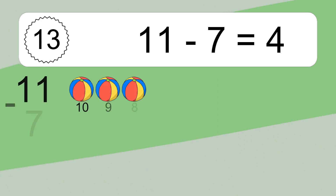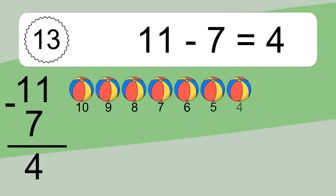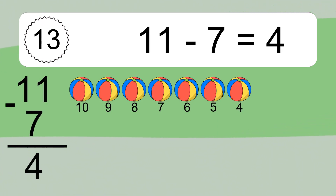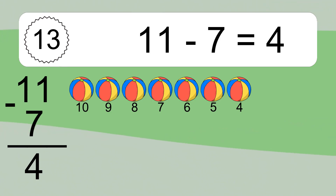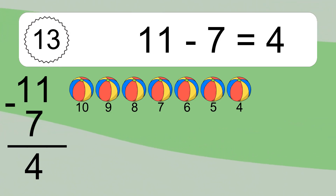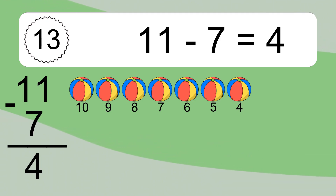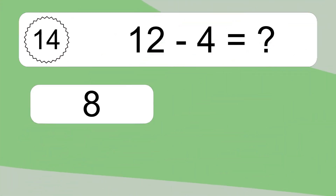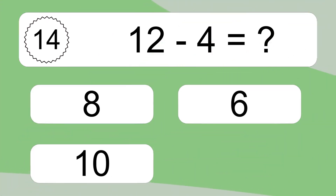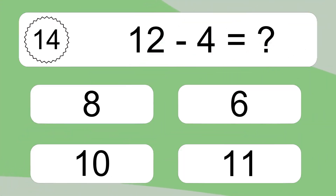11 minus 7 equals what? 11 minus 7 equals 4. Let's count it: 10, 9, 8, 7, 6, 5, 4.